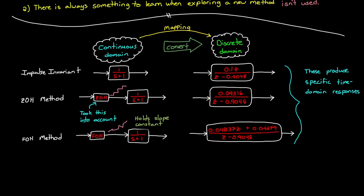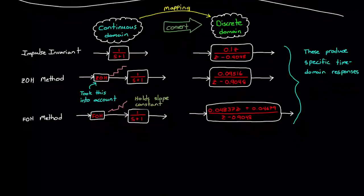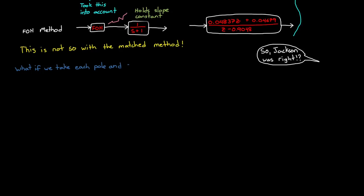However, the matched-pole-zero method isn't trying to do that. It won't produce a similar time domain response as its s-domain counterpart. In fact, it doesn't even produce a similar frequency domain response, which is the whole reason Jackson made that statement in his book. Instead, the matched-pole-zero method answers the question, what if we just take each pole and zero in the s-domain, and move them over individually to the corresponding spot in the z-domain? What would we get then?